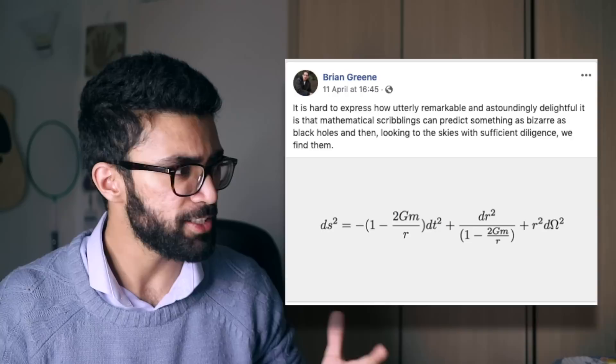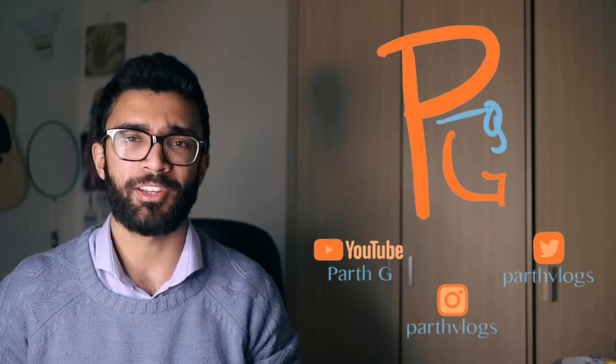Fairly recently, a physicist named Brian Greene posted this photo on his Facebook page. This is a photo of the Schwarzschild metric, and he posted this on the day that the very first picture of a black hole that humanity has ever taken was announced for the first time. On Brian's Facebook page, there were lots of comments along the lines of: this equation looks beautiful, but I wish I could understand what it said.